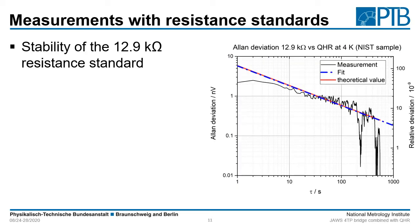We also performed measurements with a resistance standard and we are interested in the stability of our resistance. The first measurement again was an Allan deviation plot in nanovolt over measurement time. The black measured data fits perfectly the theoretically expected value, this time accounting for the input noise of the pre-amplifier and the Johnson noise of the QHR at 4 K plus the Johnson noise of the 12.9 kΩ reference resistance standard at the thermostat temperature.